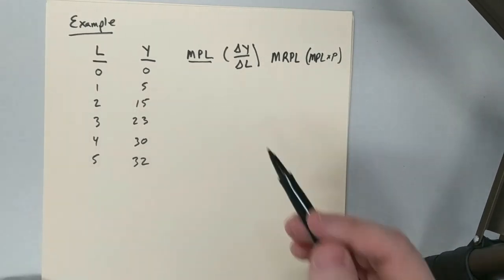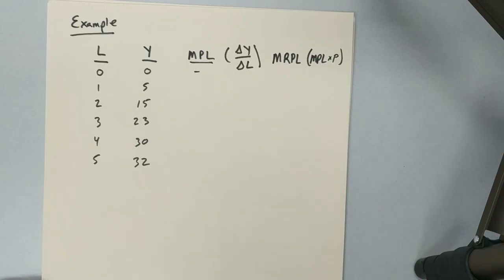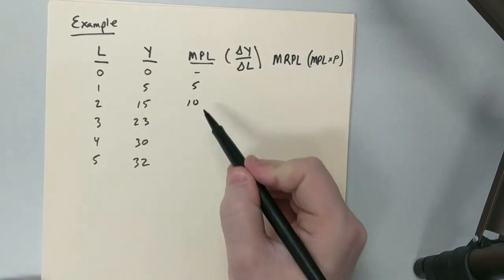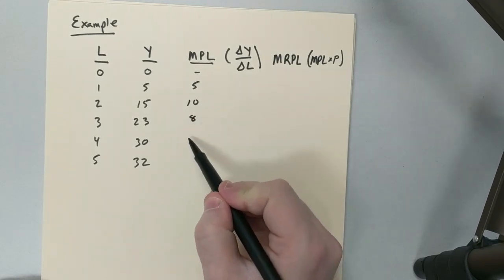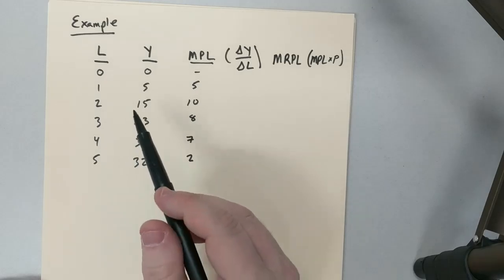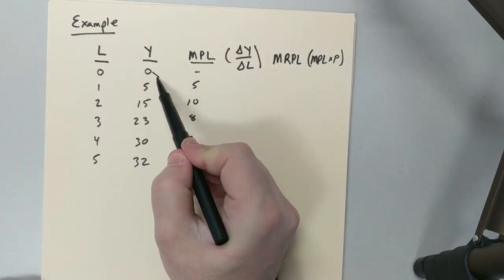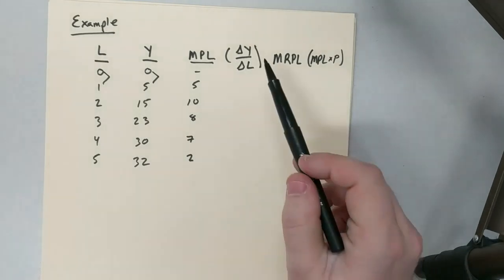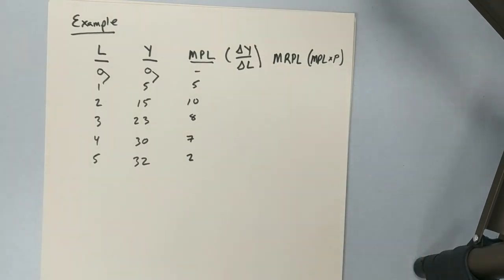MPL, in this case, the first one is nothing. Then I go 5, 10, 8, 7, and 2. And the way we found that is just by looking at how output's changing per each labor. So my change in output over my change in the number of workers.